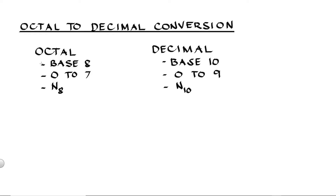Octal is a base 8 number system using 8 digits from 0 to 7, and we use a subscript 8 to identify an octal number. A decimal is a base 10 number system using 10 digits from 0 to 9, and we use a subscript 10 to identify a decimal number.